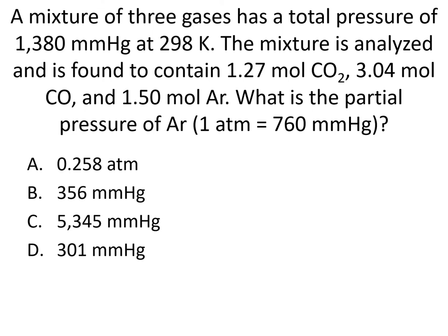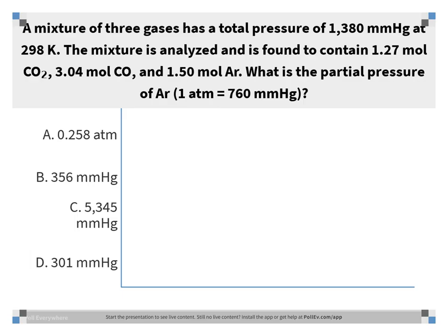Here's a practice question. A mixture of three gases has a total pressure of 1380 mmHg at 298 K: 1.27 moles CO2, 3.04 moles CO, and 1.50 moles argon. What is the partial pressure of argon? The answer is B, 356 mmHg. First find the mole fraction of argon: 1.50 / (1.27 + 3.04 + 1.50). Then multiply that mole fraction by the total pressure of 1380 mmHg to get 356 mmHg.